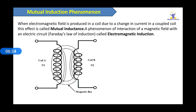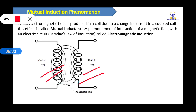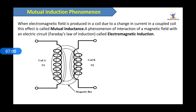We have coil A and coil B. N1 is the number of turns in coil A, and N2 is the number of turns in coil B. Due to mutual induction in the N1 coil, current flows in the N2 coil due to electromagnetic induction. The definition: when an electromagnetic field is produced in a coil due to the change in current in a coupled coil, this effect is called mutual induction — a phenomenon of interaction of magnetic field with an electric circuit, called electromagnetic induction. This is the basic principle of transformers.